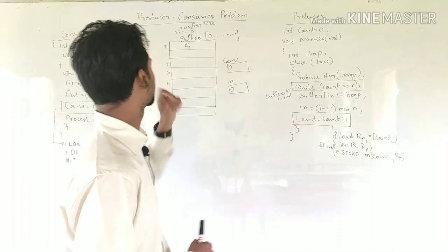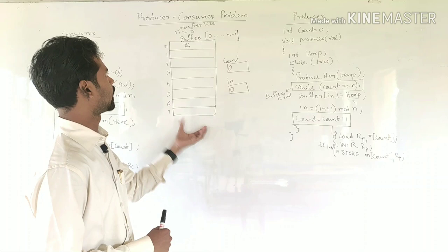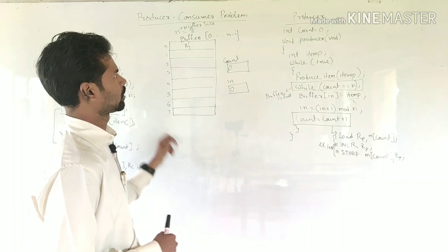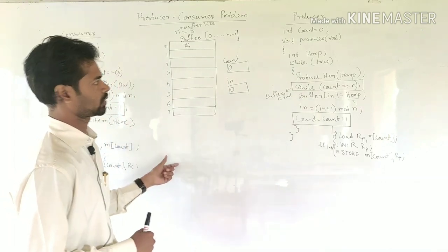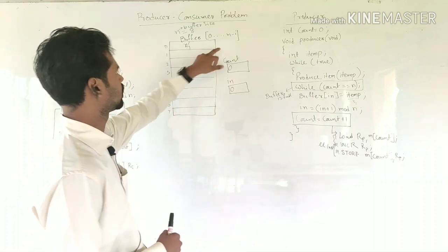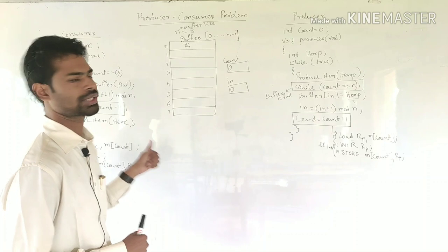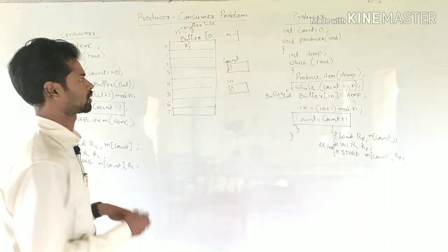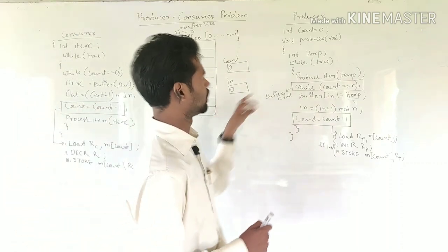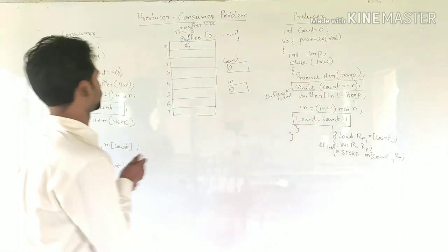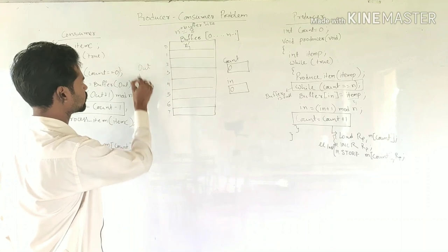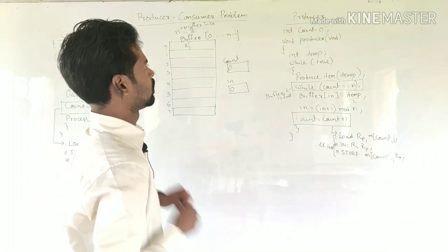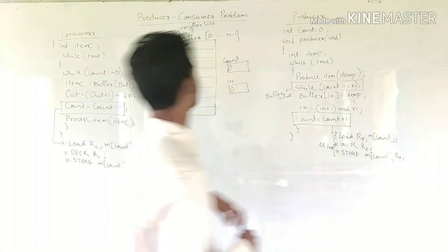The buffer size is n, that is 8, with index starting from 0 to 7. Both the producer and consumer processes share the same buffer and also share the count variable. Count is a global variable shared by both processes. The variable 'in' is used for the producer process and 'out' is another variable used for the consumer process.